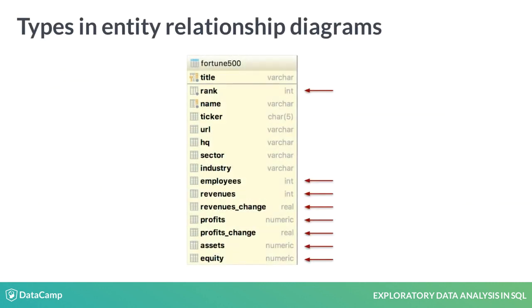You can find the type of each column in the entity relationship diagram. Here's the Fortune 500 table. There are three different numeric data types used in the table: integer, real, and numeric. Even if you don't have an entity relationship diagram, the column type is a core piece of information you can expect to find in other kinds of documentation.